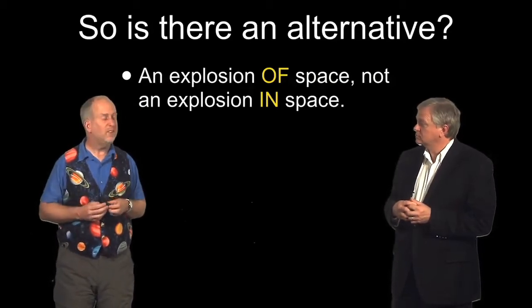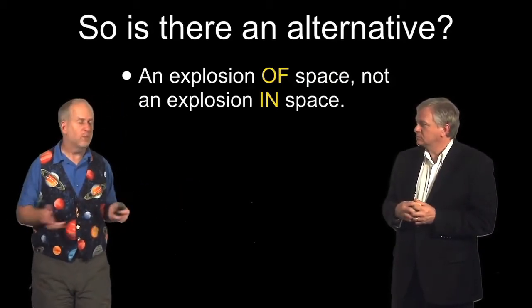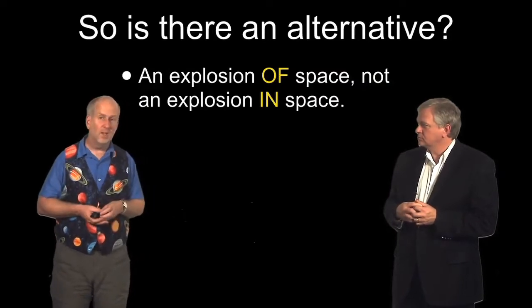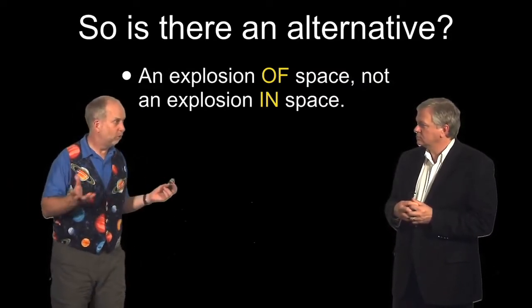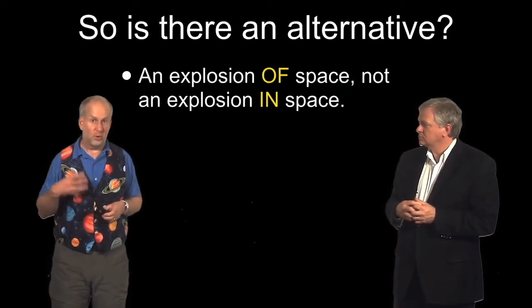Einstein's idea is that space itself can do stuff. It's not just the passive stage on which matter goes around and does its things. It actually can, for example, expand, shrink, get curved, do all sorts of stuff. This is the theory of general relativity.